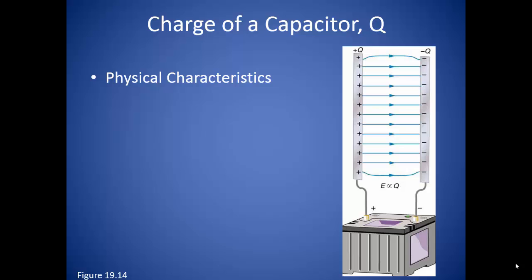As you might imagine, the more charge that a capacitor can hold, the more energy it can store. The amount of charge a capacitor can hold depends on the capacitor itself. The physical characteristics — the size and material — ultimately decide the maximum charge that can be held by the capacitor. The charge also depends on the voltage applied from the battery in order to charge the capacitor.